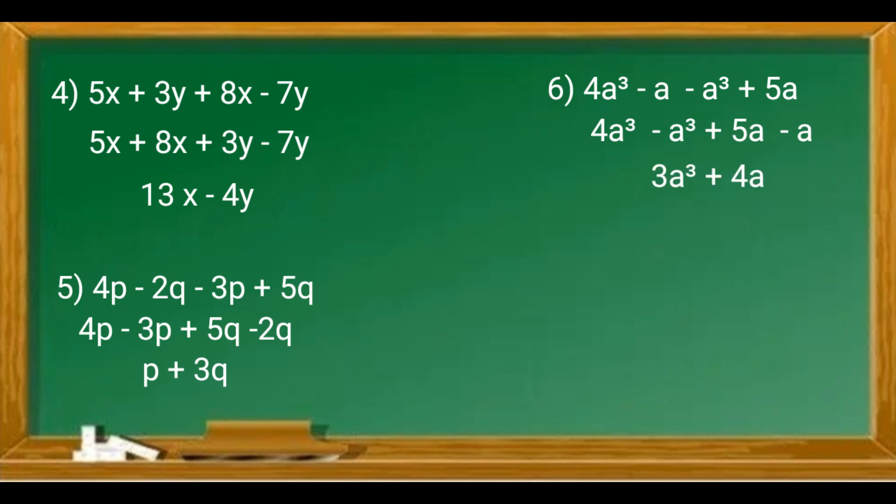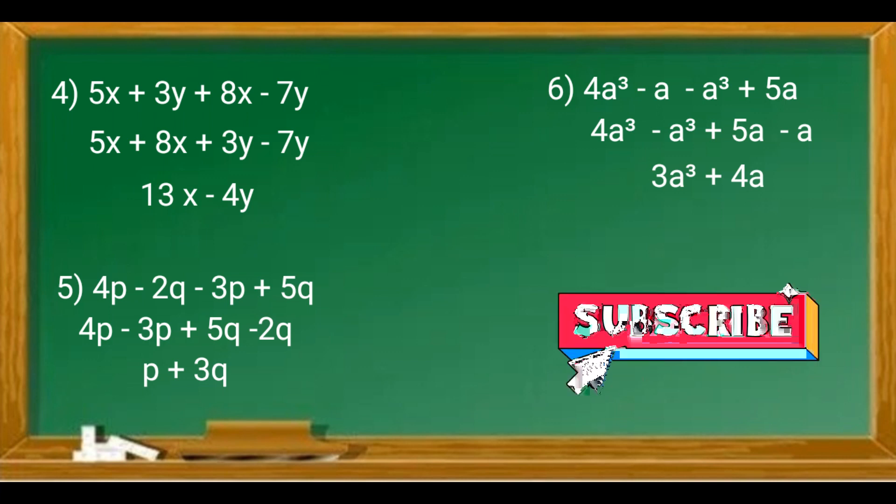4 - 1 = 3, so you get 3a³. 5 - 1 = 4, so 4a. The answer is 3a³ + 4a.